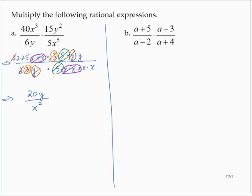Exercise B: (a plus 5) over (a minus 2) times (a minus 3) over (a plus 4). We would multiply the entire (a plus 5) by (a minus 3) in the numerator, giving us (a plus 5)(a minus 3). In the denominator, we have (a minus 2)(a plus 4). There are no common factors, so we cannot remove any, and it is common practice to leave the expression in this factored form.